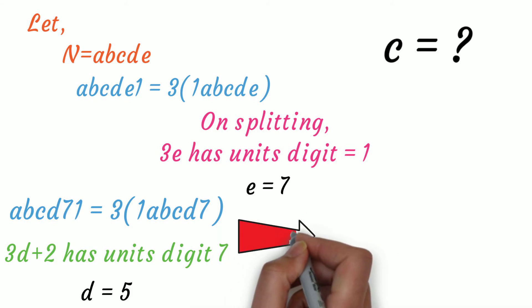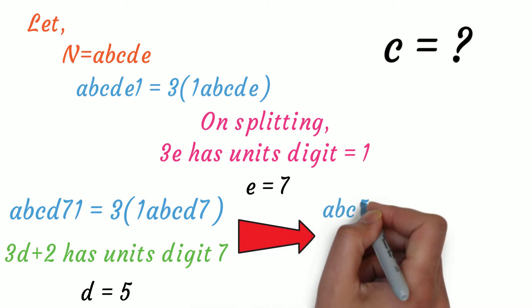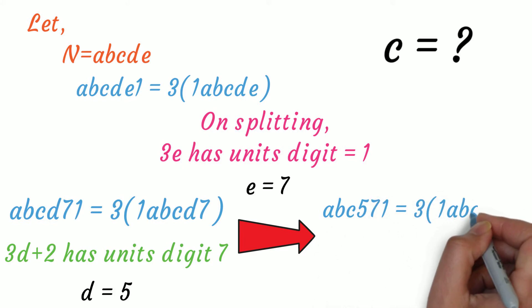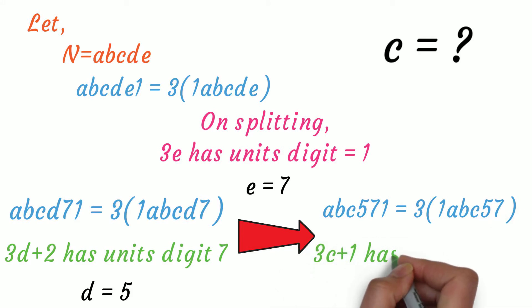Now, putting it back, we get abc571 equals 3 times 1abc57. Now, 3c plus 1 must leave a unit digit of 5. The 1 is the carryover from 17. This gives us c equal to 8 as the only possibility.